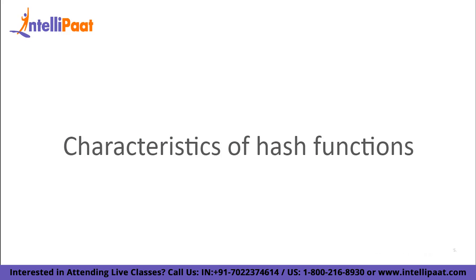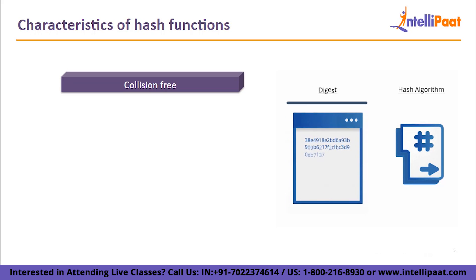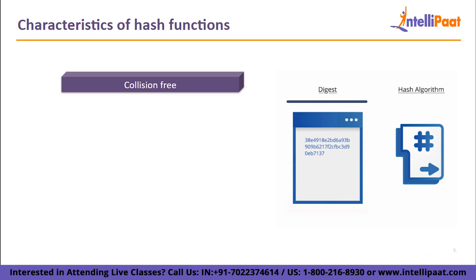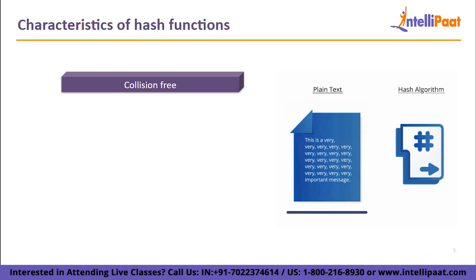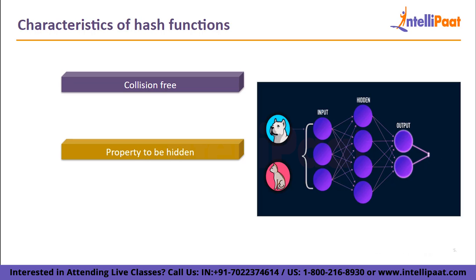Now let us take a look at a few of the characteristics of hash functions. Firstly, collision free. A hash function is collision free because it possesses two essential characteristics: the function should transmit equally likely inputs to all realistic outputs, and the function must be deterministic to ensure it always produces the same results for the same input. A collision-free hash function guarantees that no two input hashes map to the same output hash. Next, the property to be hidden. A hash function converts data of any size to data of a specific size. A good hash function should make it challenging to infer the input value from the output. It should be challenging to identify two distinct inputs that result in the same output.